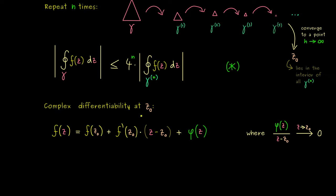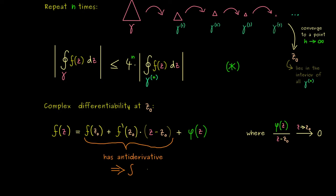Recalling part 6 of the series, complex differentiability at a point can be written as: there exists a complex number f'(z₀) and a rest function phi, with the equality f(z) = f(z₀) + f'(z₀)(z − z₀) + phi(z) holding and phi(z)/(z − z₀) → 0 as z → z₀. This is simply the linearization that complex differentiability provides. The nice part is that for the linear term we already know what happens for closed curves: the function f(z₀) + f'(z₀)(z − z₀) has a primitive, an antiderivative, so closed curve integrals of it give 0. Therefore when calculating the integral, this linear part vanishes.